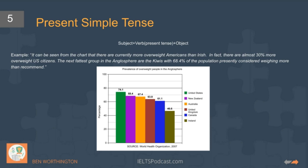Present simple tense: we can use this when there's no date. There is a date here — the whole graph is 2007 — however, it would be a little clumsy and unnecessary to put everything in the past because there isn't really a change. So here we can use this passive structure, which is very useful. It's probably a good sentence structure to master and to incorporate into your next IELTS Task 1 writing task.